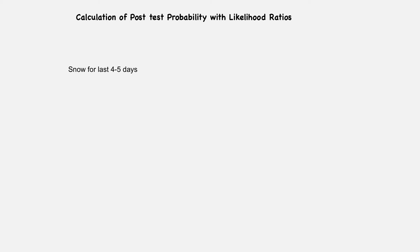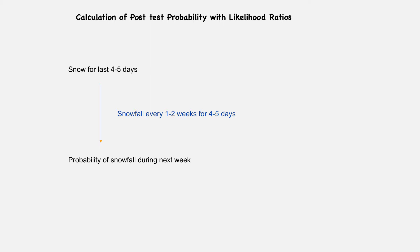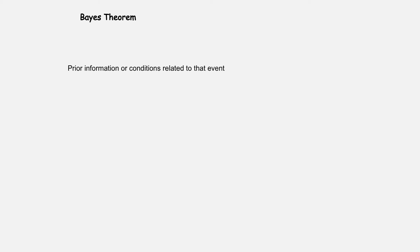Today we will discuss how to calculate post-test probability with the help of likelihood ratios. To understand this concept, suppose you go to a town where it has been snowing for the last few days. You are worried about next week. Somebody from that town tells you about patterns of snowfall in that area. After we know the patterns of snowfall, we can calculate the probability of snowfall during next week. Such calculations are based on principles of Bayes theorem. According to this theorem, if we have prior information or knowledge of conditions related to an event, we can calculate the probability of that event.